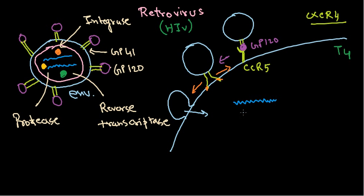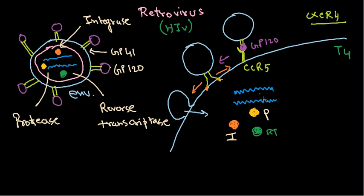Inside the cytoplasm we now have the RNA (the single-stranded RNA copies) along with the three important enzymes: reverse transcriptase, protease, and integrase. All these are released into the cytoplasm of the host cell.